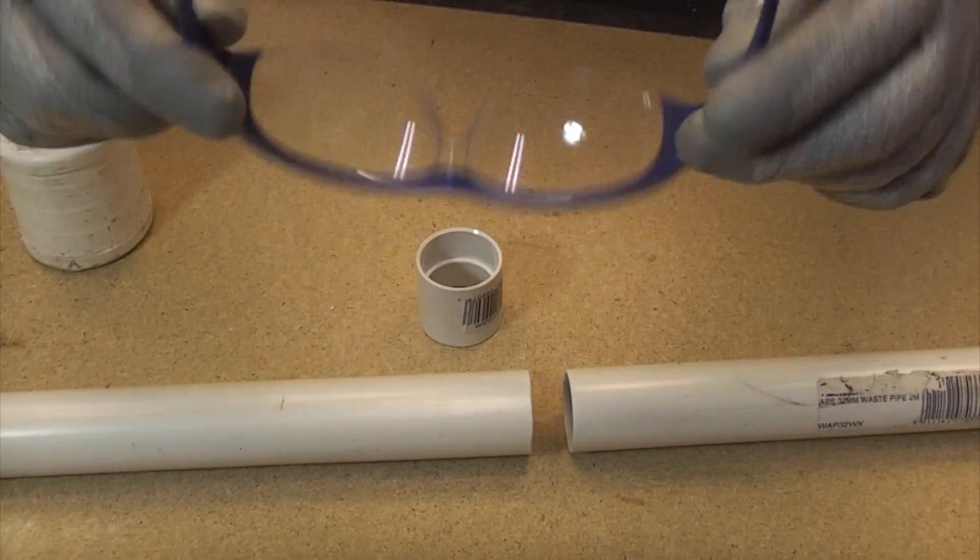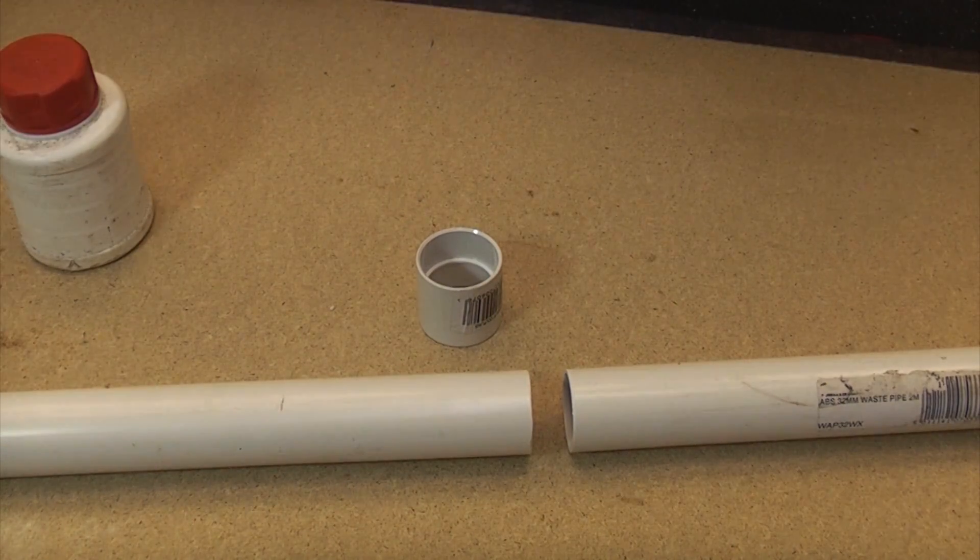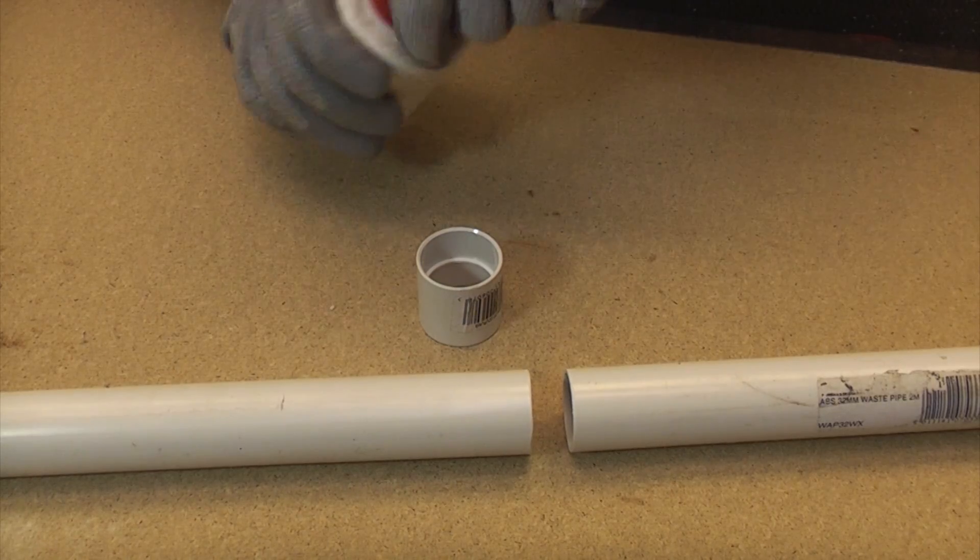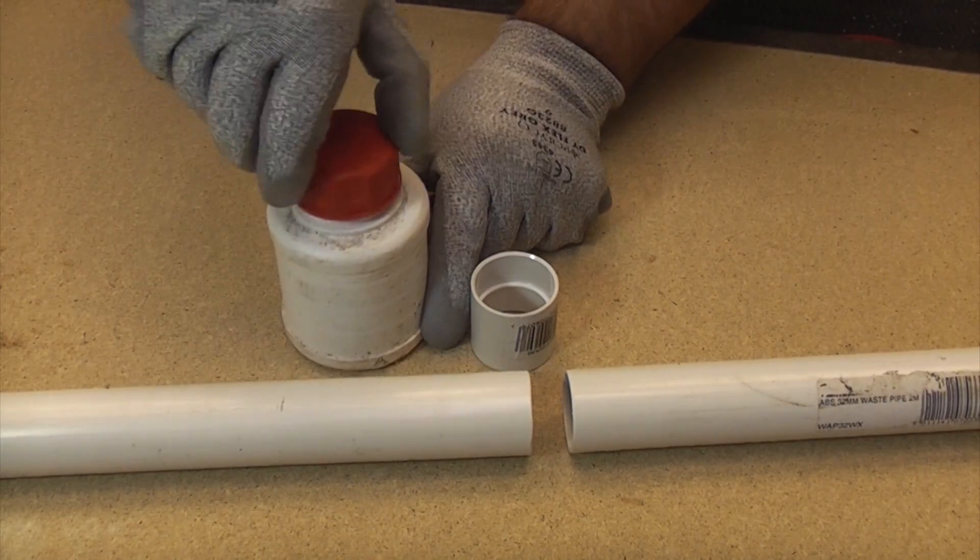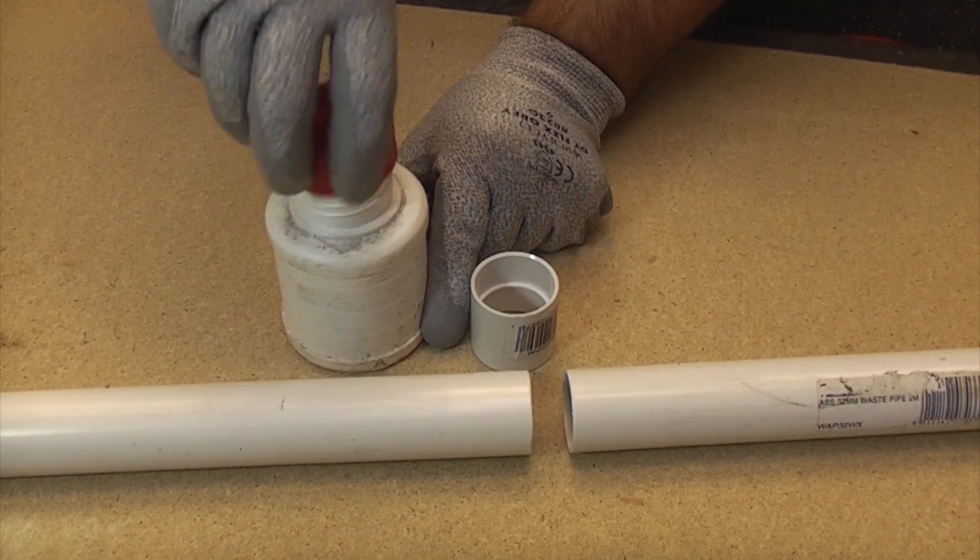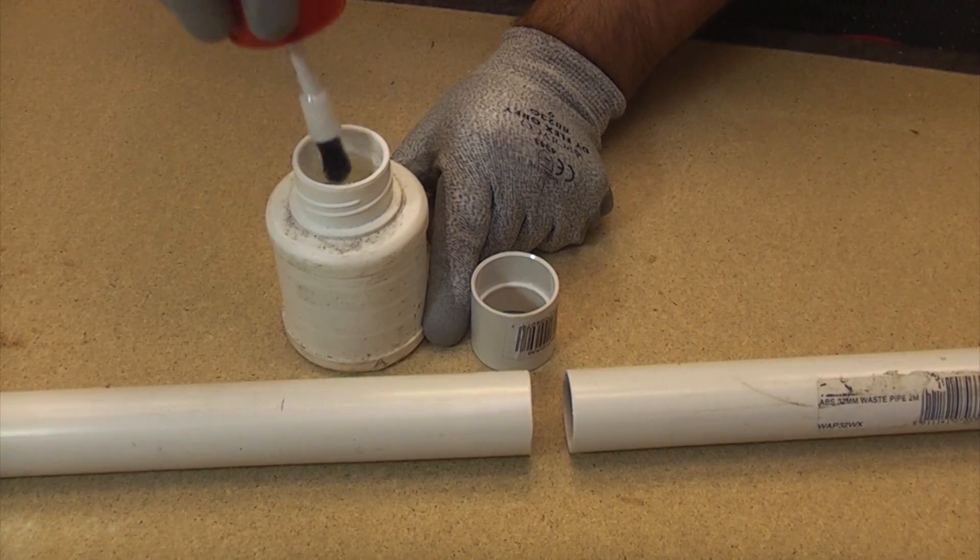Now the important bit—we're going to put a pair of safety glasses on. The last thing you want to do is get this in your eye. When we undo the solvent, there should be a brush already in there.